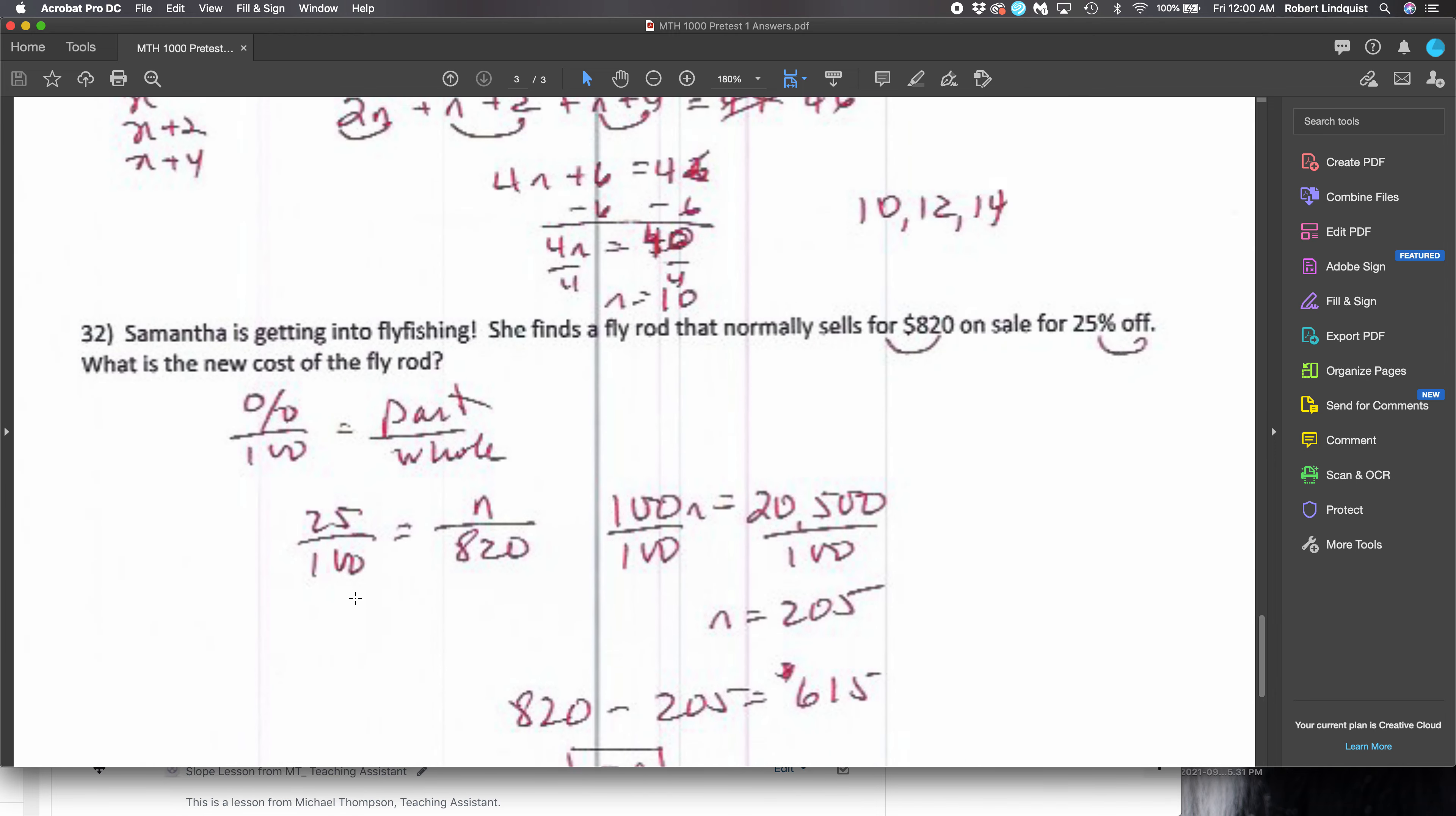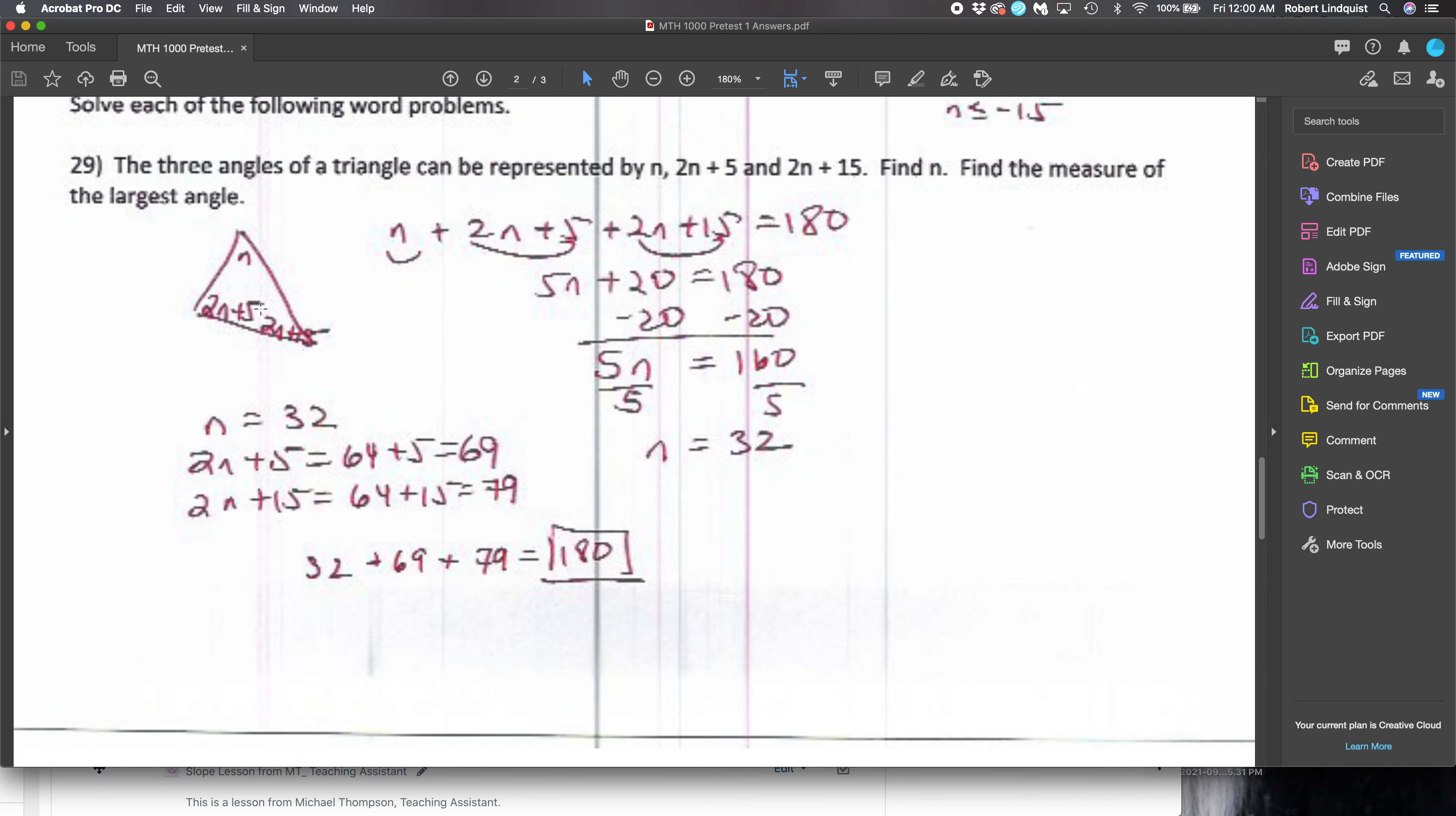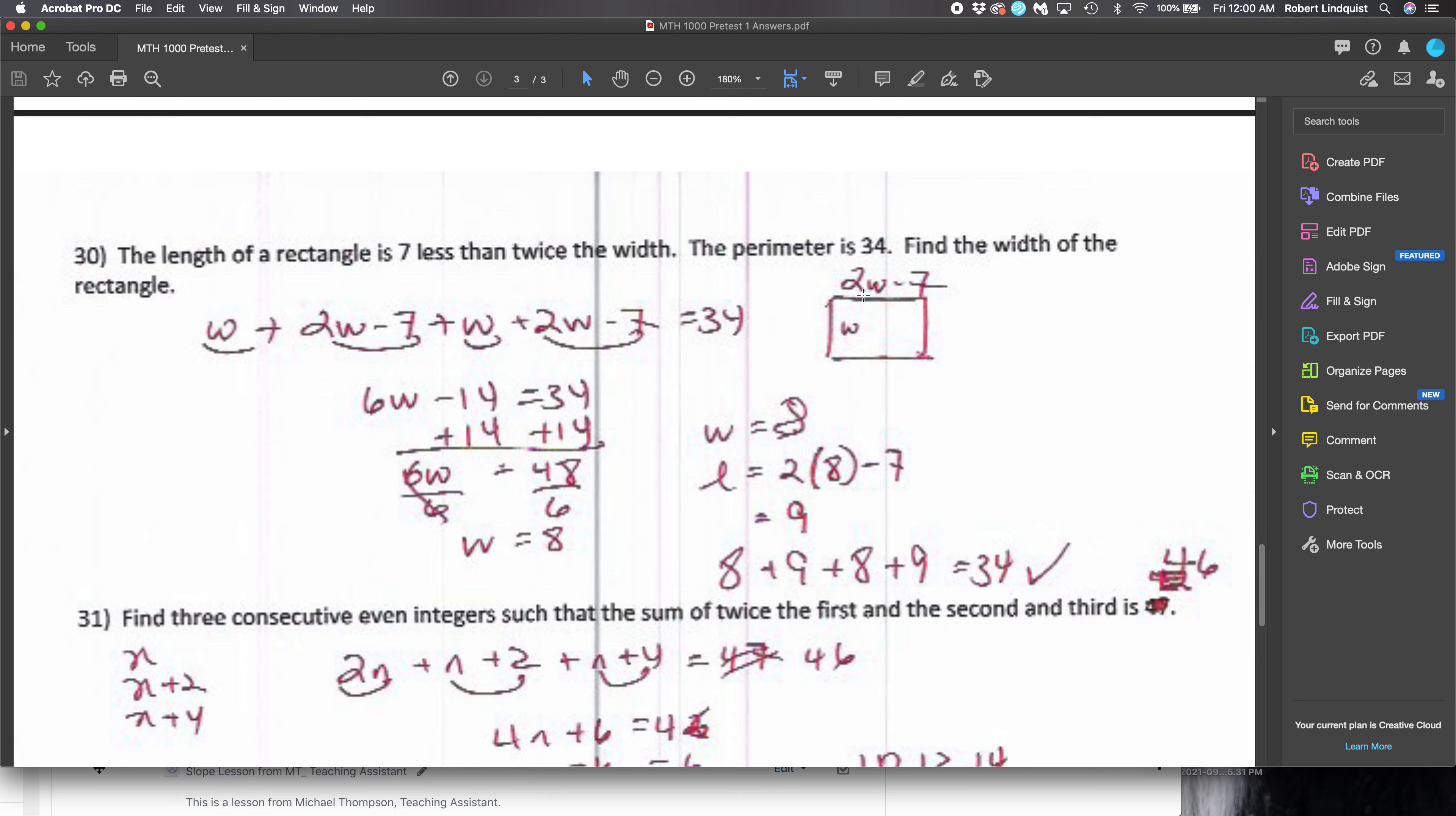Back to these word problems, I just want to explain a couple of little things with the word problems and where we're coming from here. First off, the first word problem has to do with the three angles of a triangle. Notice I drew a picture, that's always helpful. I fill them in. And what do the three angles of a triangle always add up to? It's 180. Next, perimeter question. Drew a picture. The sides are w, 2w minus 7, but remember there's two other sides: w over here, 2w minus 7 on the bottom.